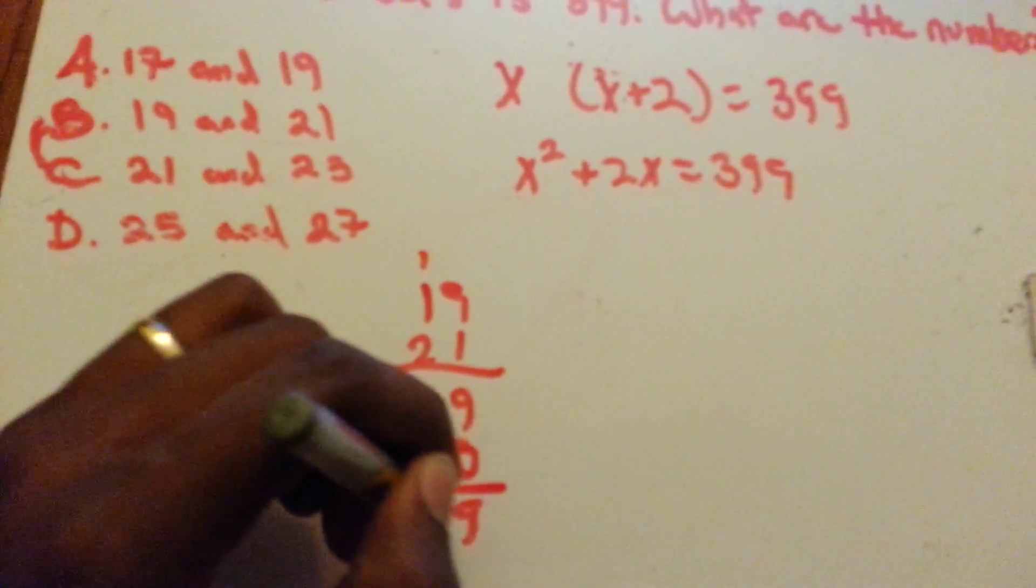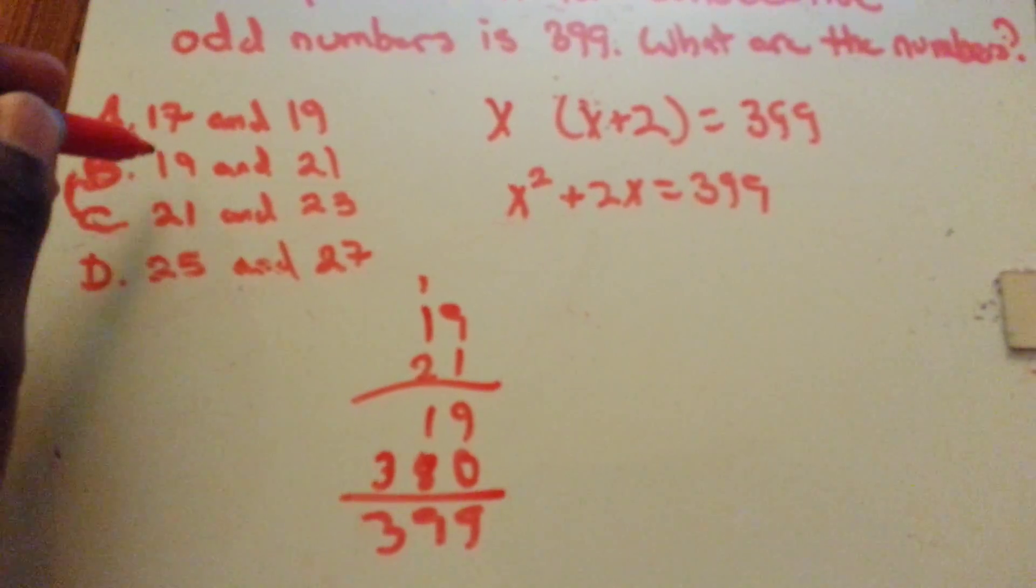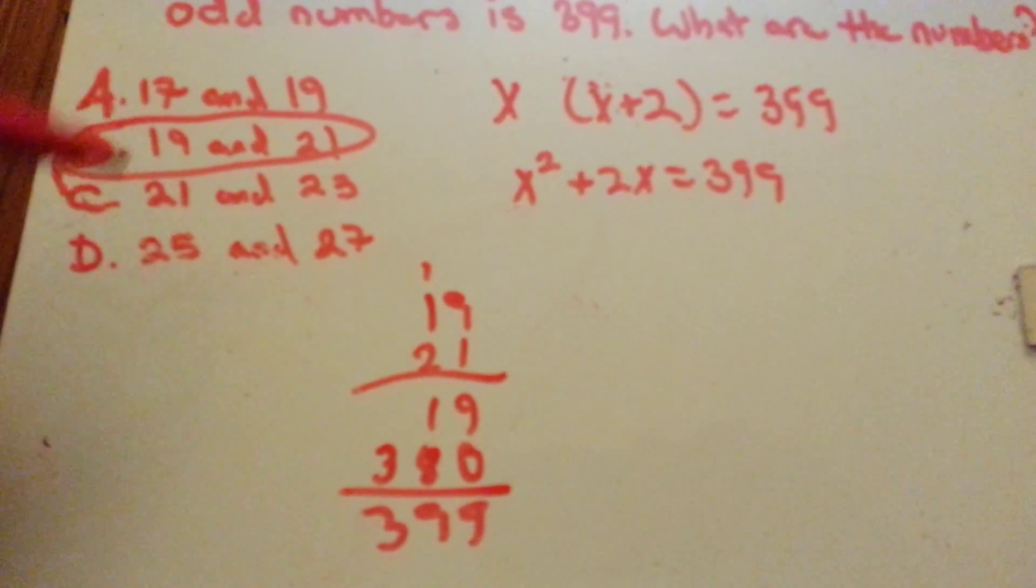399. Well, there's the answer right there. So we find out the answer is B, 19 and 21.